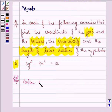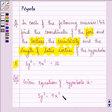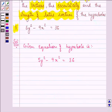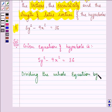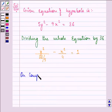Here the given equation of hyperbola is 5y² - 9x² = 36. Now we shall be dividing the whole equation by 36 so that it will be easier for us to compare. So on doing so we have y²/(36/5) - x²/4 = 1.